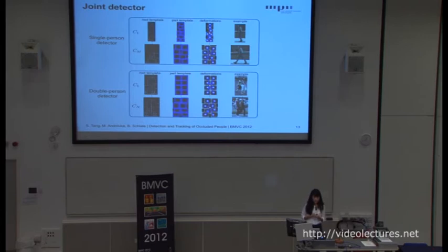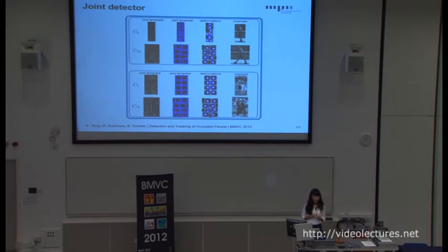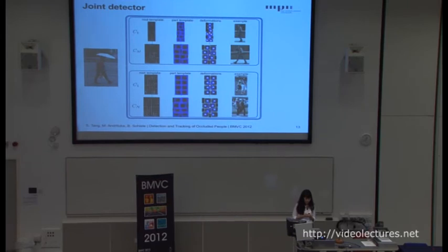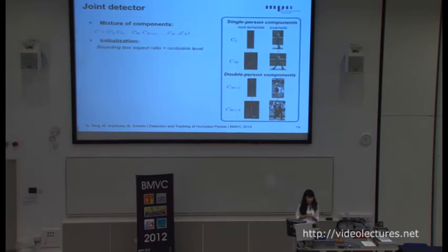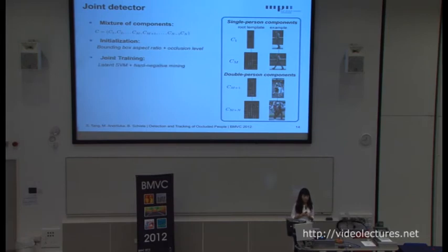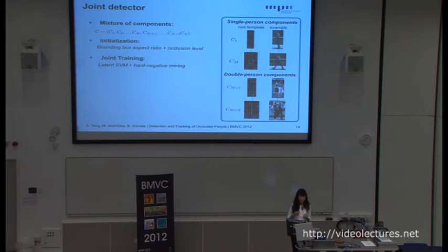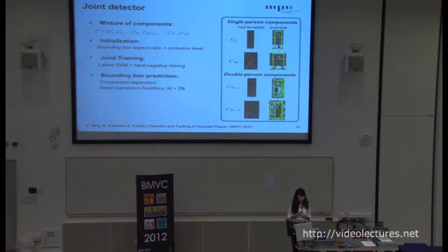The single person detector and the double person detector use a mixture of components. For the joint person detector, we combine all the components from the two detectors and jointly train them into a single model. When there is a single person in the test image, one of the single person components fires and predicts a single bounding box. When there is a person pair, one of the double person components fires and predicts two bounding boxes. We initialize the single person components by bounding box aspect ratios and the double person components by occlusion levels. For synthetic training images with less than 5% occlusion, we reassign them from the double person component to the single person component. Bounding box prediction is now component dependent.